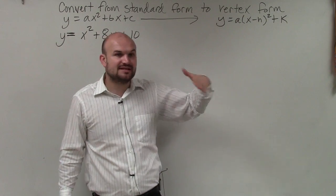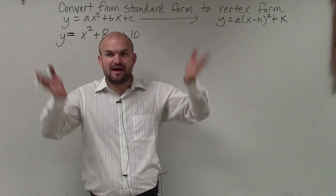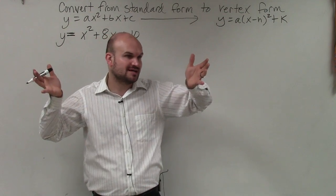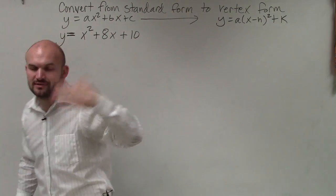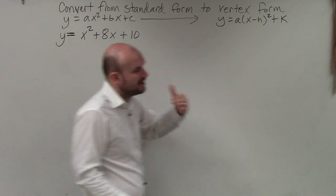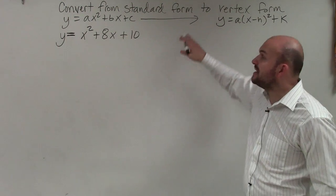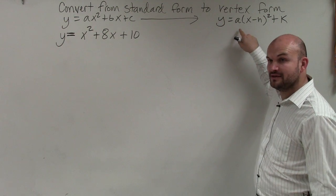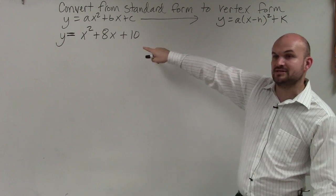If a is equal to 1, then we just graph the parent graph at our new vertex. And if a is not equal to 1, then we will have to use a table of values. I just wanted to review some of the benefits of sometimes graphing in vertex form compared to standard form.